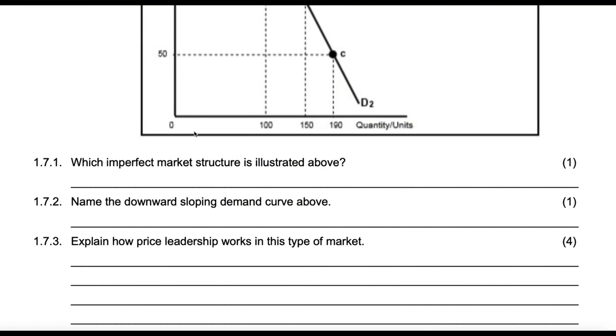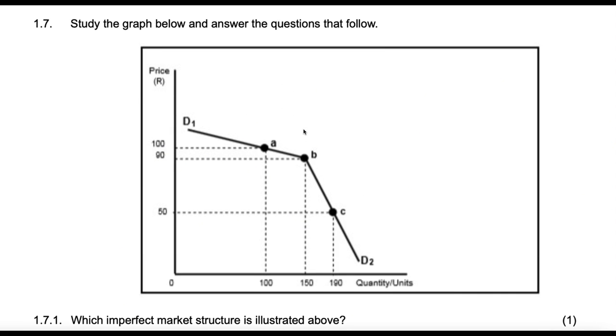Then explain how price leadership works in this type of market. This market structure has few firms in it. An example can be banks, an example can be network service providers. I'll use network service providers, for example.